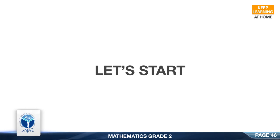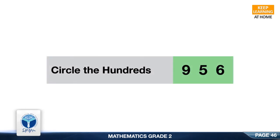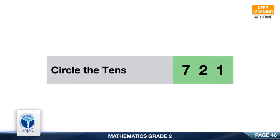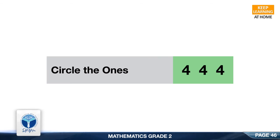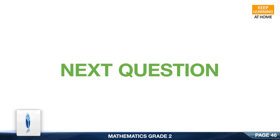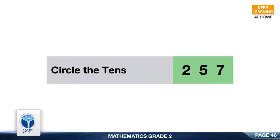Let's start. Circle the hundreds in 956. Good, it is 9. Next: Circle the tens in 721. Good, it is 2. Next question: Circle the ones in 444. Good, it is 4.